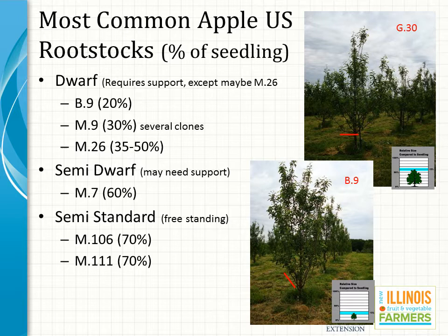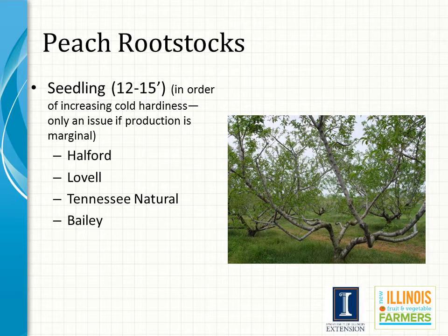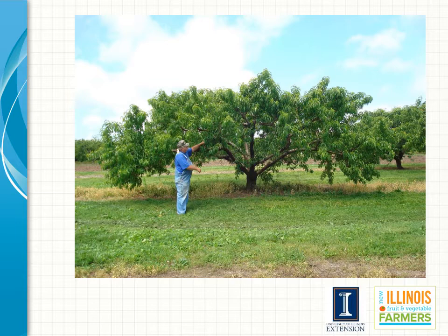Peaches are almost exclusively available on seedling peach rootstock, which means there is no dwarfing effect. Almost all peach rootstocks are suitable for lighter, well-drained, sandy, loamy soils and do not tolerate wet or poorly drained conditions. Peach rootstocks have been selected more for their tolerance to stresses such as root-knot nematode, calcareous soils, water logging, soil hardiness, and peach tree short life. Mounding of planting sites or raised beds will help prolong tree life and reduce winter injury.